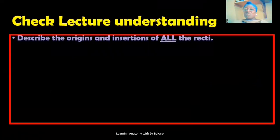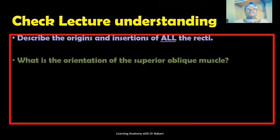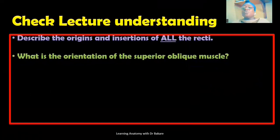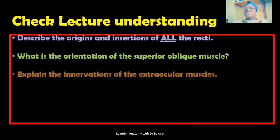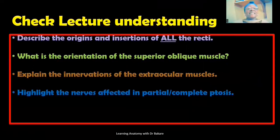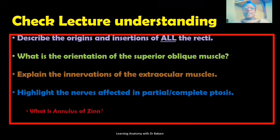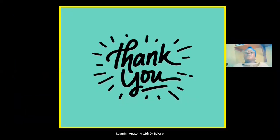To check understanding of this lecture: describe the origins and insertions of all the recti muscles; describe the orientation of the superior oblique muscle; explain the innervations of the extraocular muscles; identify the nerves affected in partial versus complete ptosis; and define the annulus of Zinn. Thanks for watching this video — we'll meet again in the next lecture.